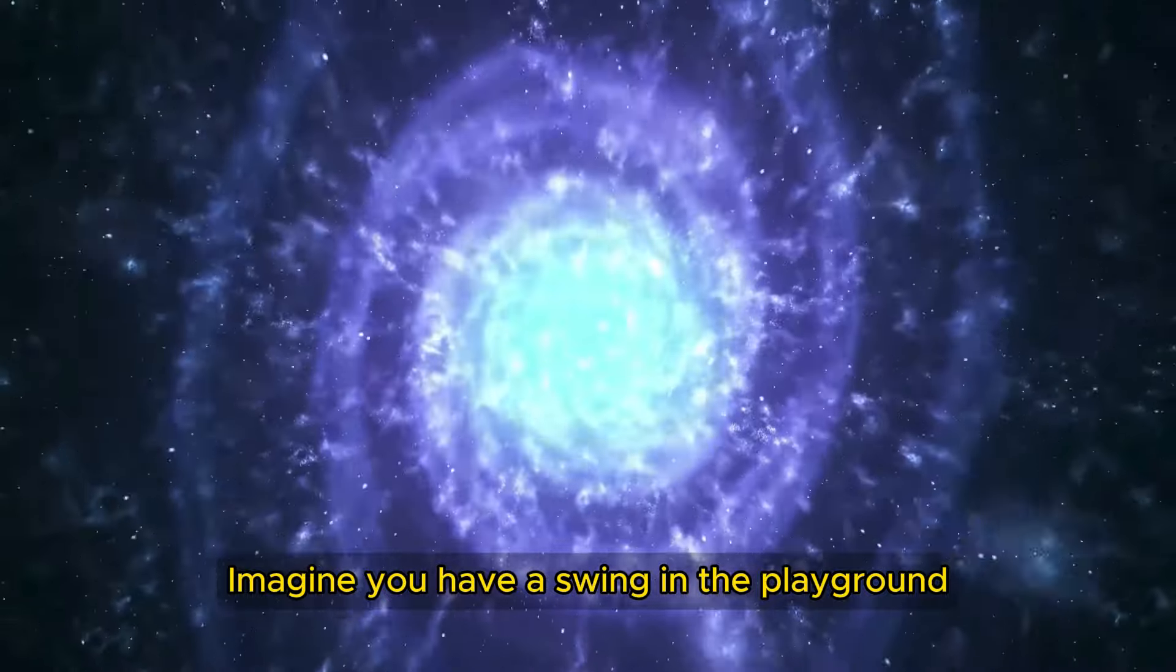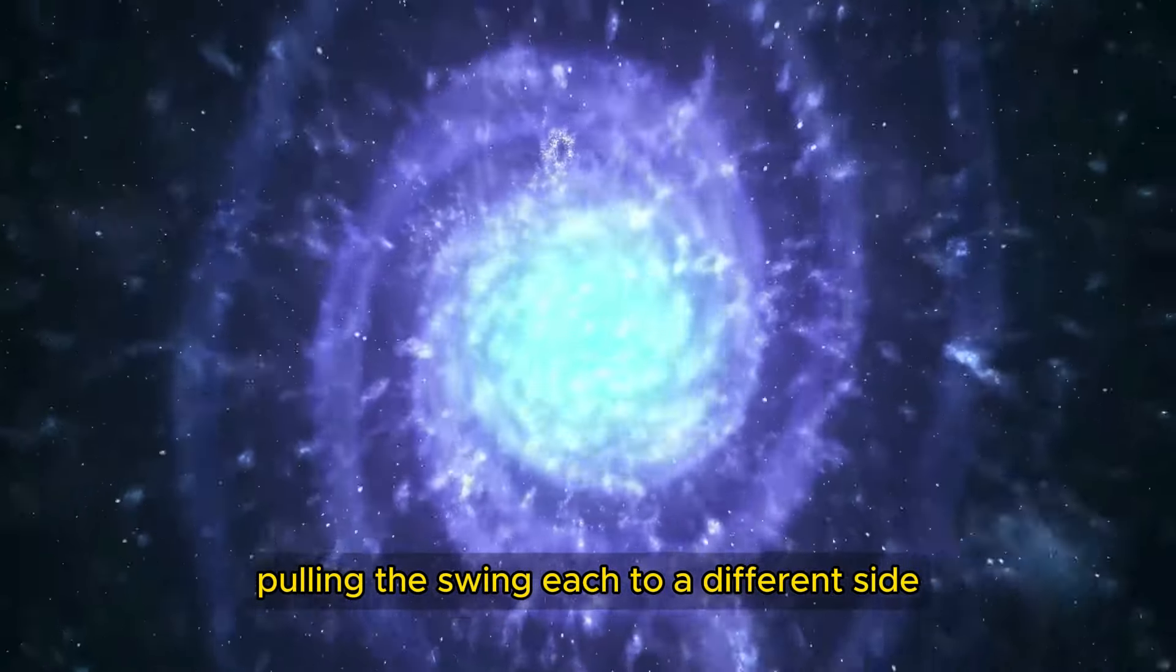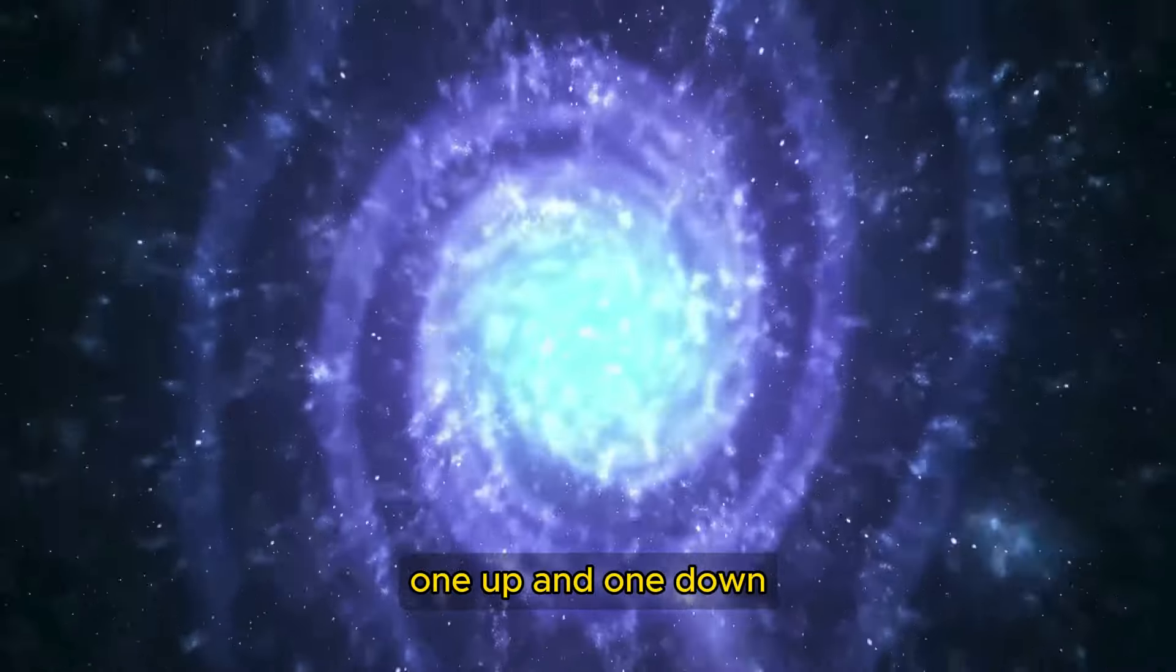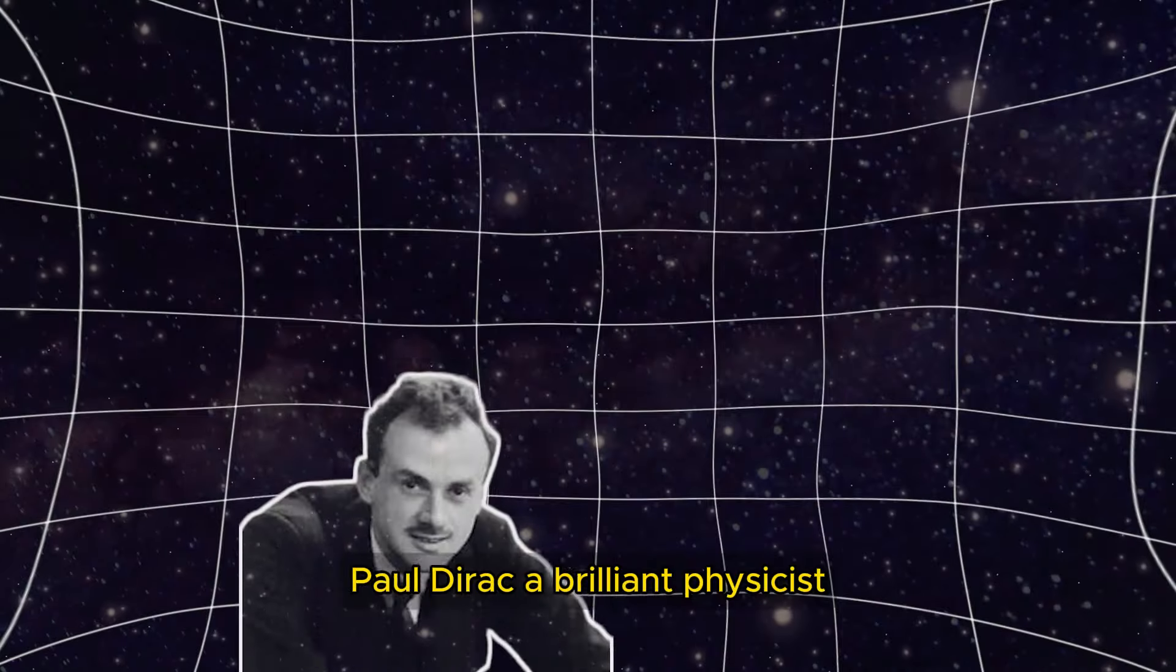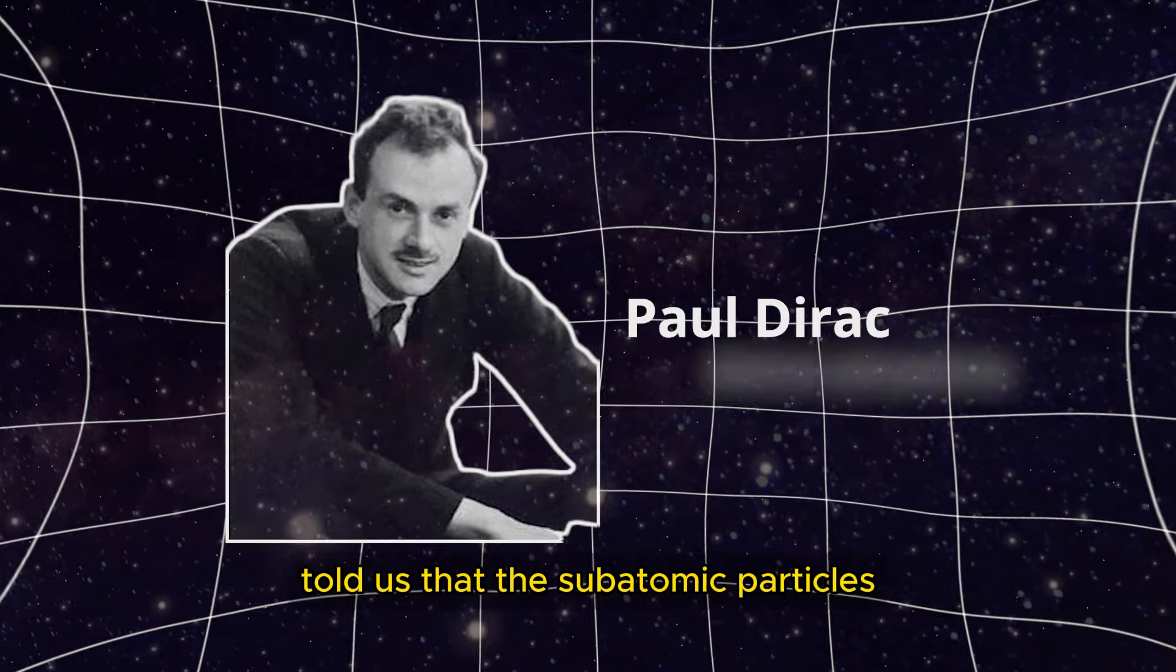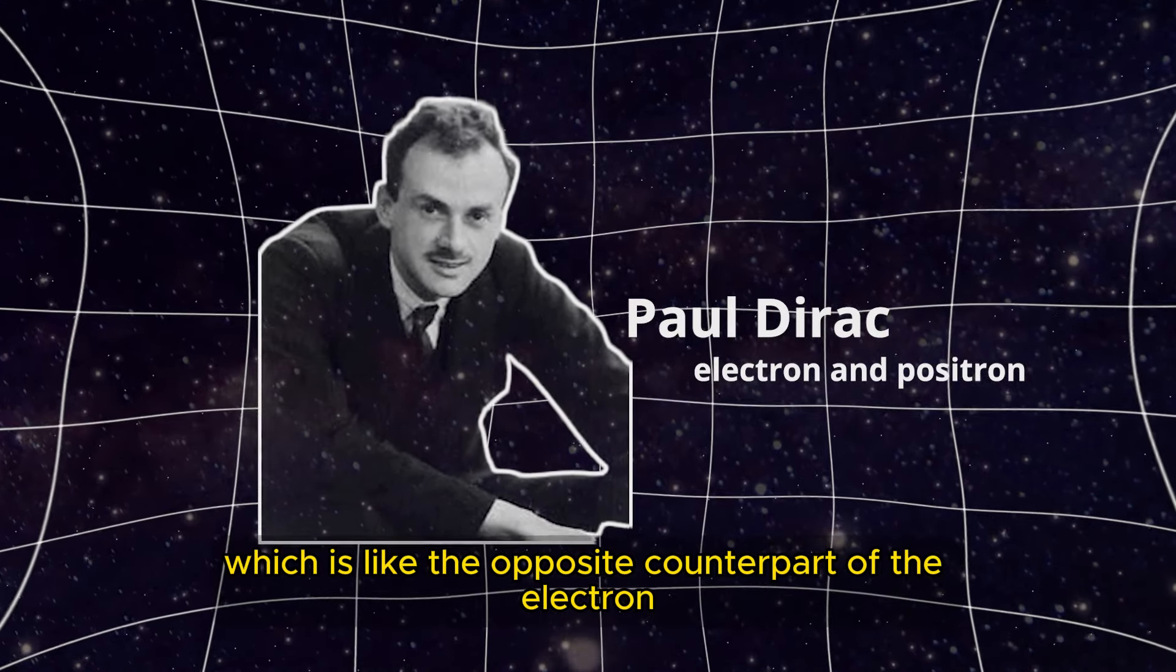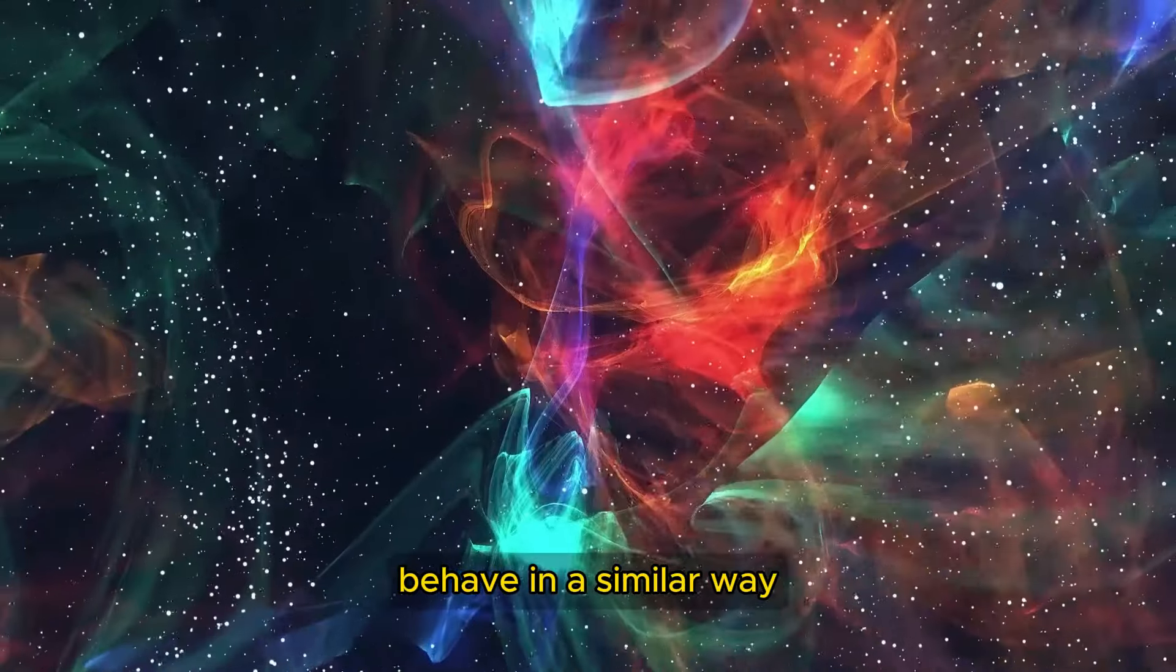Imagine you have a swing in the playground, and there are two children playing at pulling the swing each to a different side, one up and one down. Paul Dirac, a brilliant physicist, told us that the subatomic particles called electron and positron, which is like the opposite counterpart of the electron, behave in a similar way.